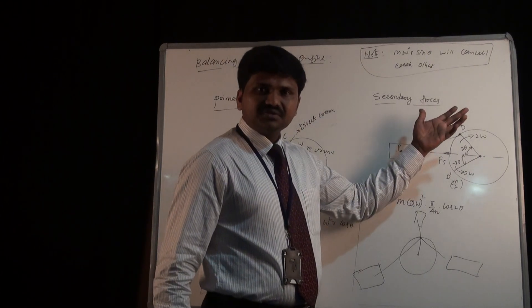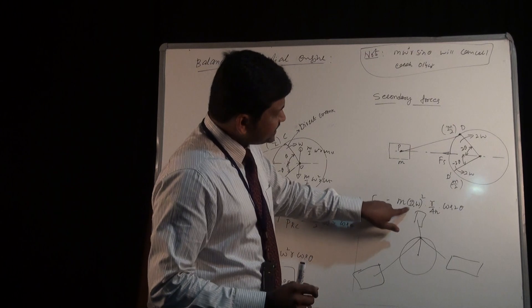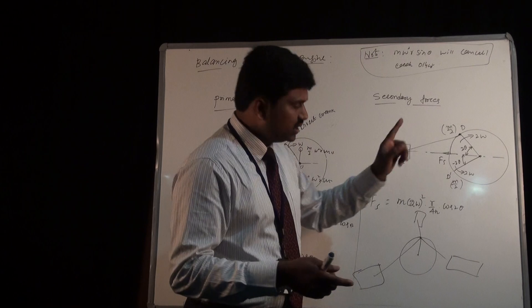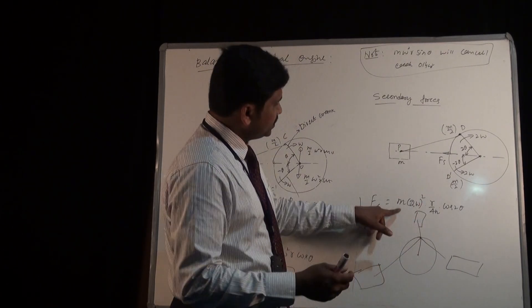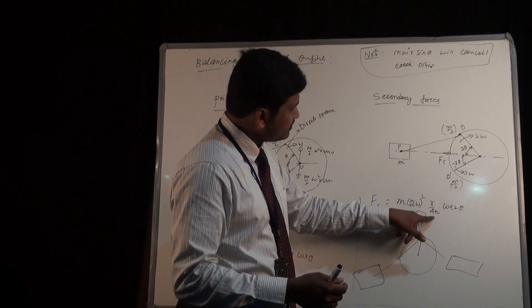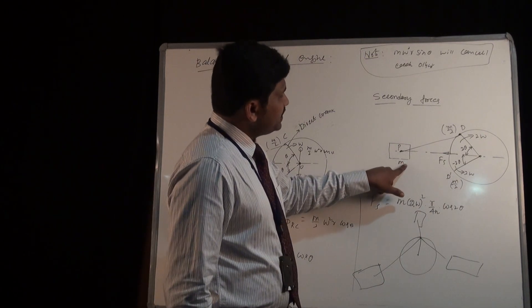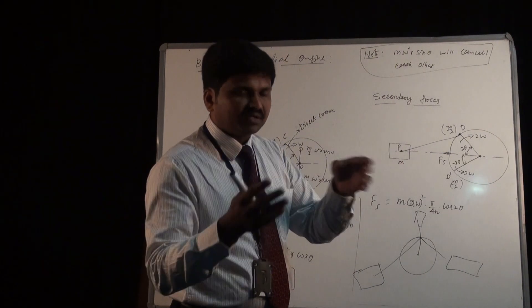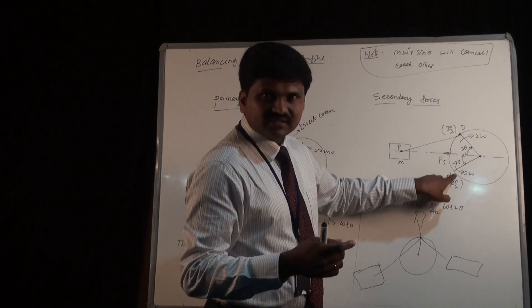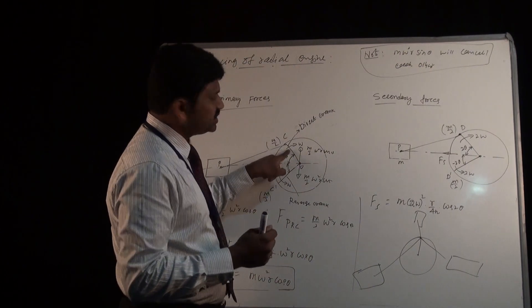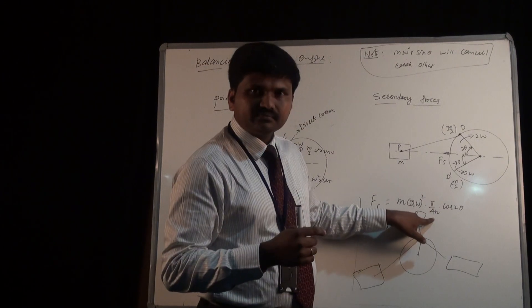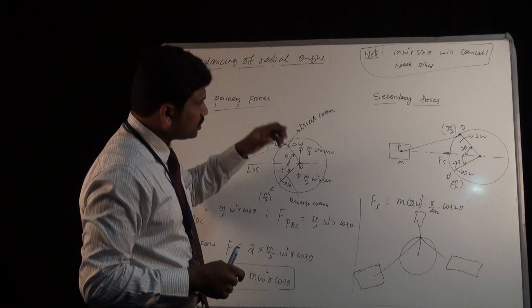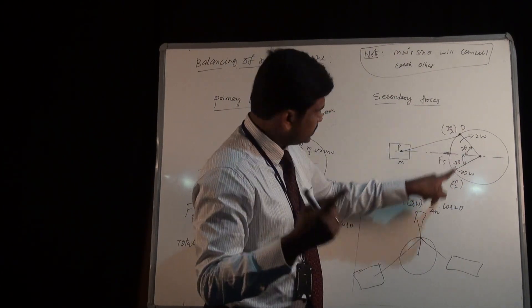Now let us come to secondary forces. The equation for unbalanced secondary forces is Mω²R·cos2θ/N. In the modified form, it is M·(2ω)²·(R/4N)·cos2θ. Here, the mass M is again split into two halves: M/2 at the direct crank and M/2 at the reverse crank. The difference is the crank radius is R/4N, not R. Also, the angular position of the direct crank from the line of stroke is 2θ instead of θ.